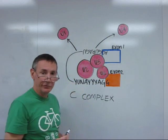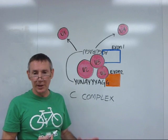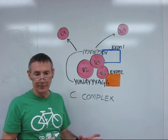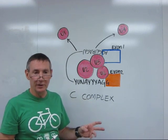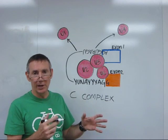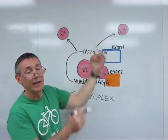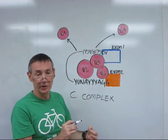After the U1 and the U4 snRNPs leave, what's left behind is the C complex. This is the complex with the catalytic activity for splicing. And what it does is it catalyzes transesterifications. A transesterification is a reaction in which one phosphodiester bond is cleaved by hydrolysis and then another one is formed by condensation.